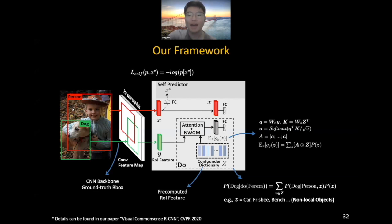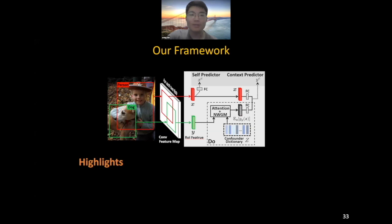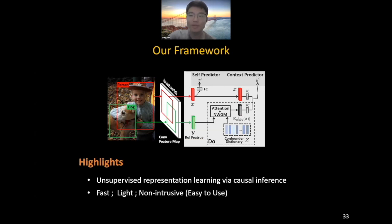Finally, X and the expectation of Z are combined to do the context object prediction. Our framework has three highlights. First, we combine causal inference with unsupervised learning to study visual common sense knowledge. Second, the designed model is fast, light, and non-intrusive — by non-intrusive we mean easy-to-use, just feature concatenation. Third, we achieve strong performance on three downstream tasks.